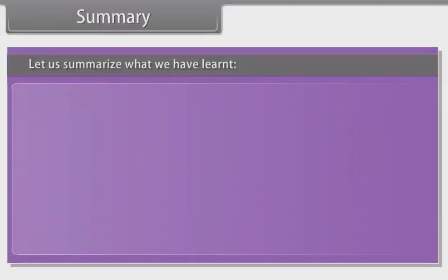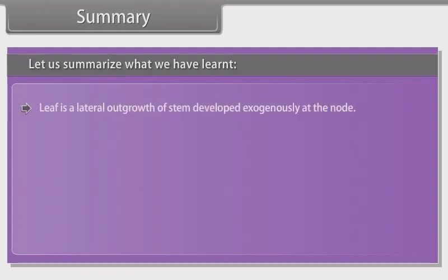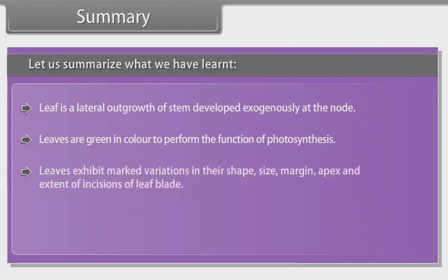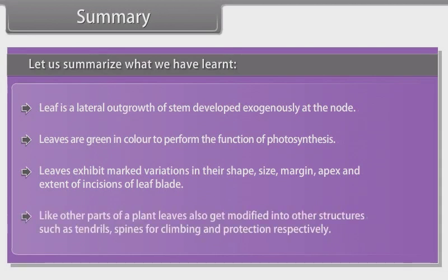Summary: Let us summarize what we have learnt. Leaf is a lateral outgrowth of stem developed exogenously at the node. Leaves are green in colour to perform the function of photosynthesis. Leaves exhibit marked variations in their shape, size, margin, apex and extent of incisions of leaf blade. Like other parts of a plant, leaves also get modified into other structures such as tendrils, spines for climbing and protection respectively.